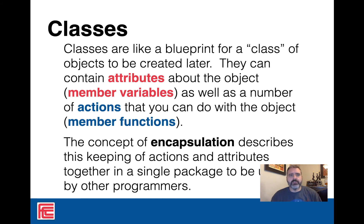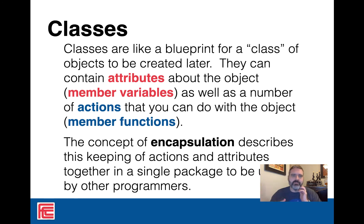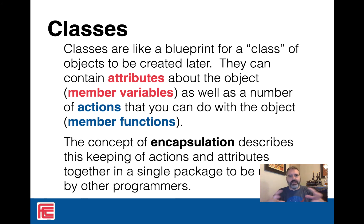Classes are like a blueprint for a class of objects you're going to create in your program. They're going to contain attributes about the object — we're going to call those member variables in C++, although in other languages like Java they'll call them fields. As well as a number of actions that you can actually do with the object — we're going to call them member functions, although in other languages they'll call them methods. Fields, methods, member variables, member functions — it's just different terms for the same concepts across languages.